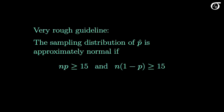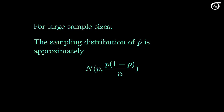That notion is summarized in the following rough guideline: the sampling distribution of P-hat is approximately normal if n times P is at least 15, and n times 1 minus P is at least 15. There are other guidelines we could use, and some sources might recommend a different number, but this is a reasonable guideline. In summary, for large sample sizes the sampling distribution of P-hat is approximately normal with a mean of P and a variance of P times 1 minus P over n. We will use these characteristics to construct confidence intervals and hypothesis tests for the population proportion P.